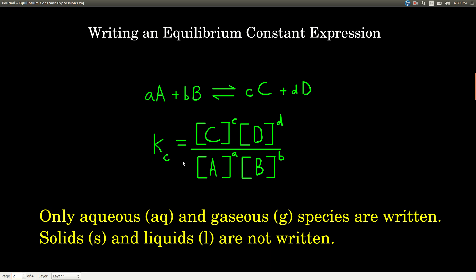And the general form of the equilibrium constant expression, Kc, is always the concentrations of the products to the powers of their coefficients. So the concentration of compound C raised to the little c, D to the d, over the reactants, A to the a, and B to the b.